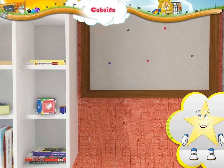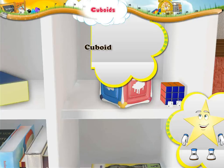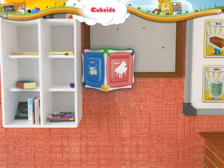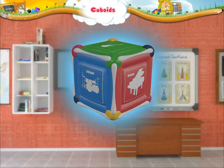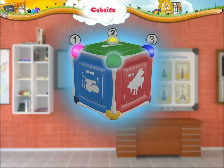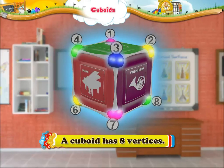Let us learn more about cuboids. Take a look at this box. It is a cuboid. Can you count its vertices? One, two, three, four, five, six, seven, and eight. So a cuboid has eight vertices.